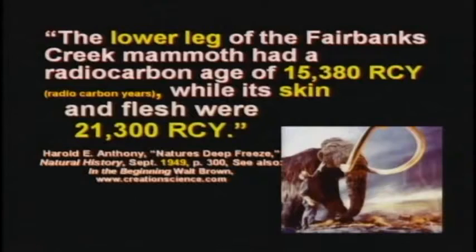When they first invented carbon dating in 1949, Willard Libby did some testing and said the lower leg of a mammoth was 15,000 years old, but the skin was 21,000. How can two parts of the same animal be different ages? Quite obviously we know one of the numbers is wrong. So how would you know either of them are right? And if either one's right, how would you know which one?